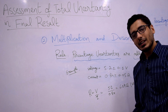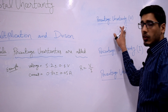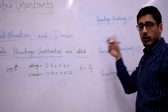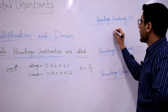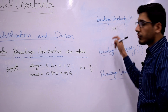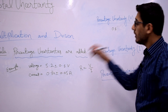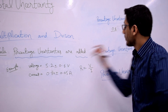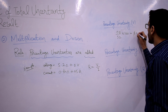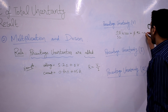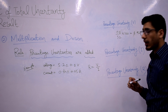Now let's get into the uncertainty associated with R. Let's first calculate the percentage uncertainty for voltage. The formula for calculating percentage uncertainty is equal to the least count of the device — which is equal to the absolute uncertainty — divided by the measurement, multiplied by 100. The result comes out as 1.92%, and let's approximate it as 2% for ease.